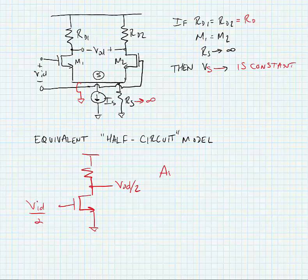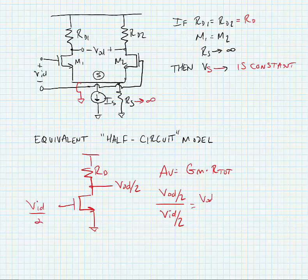Using the equivalent half circuit, we look at half the output voltage due to half the input voltage. The voltage gain is just equal to the effective GM times R total, which is VOD/2 over VID/2, equal to VOD over VID. Since this is a common source amplifier, GM is simply GM and the total resistance is simply RD, giving us the exact same gain as the more complicated superposition analysis. In the next section we'll look at finding the common mode gain and the common mode rejection ratio.